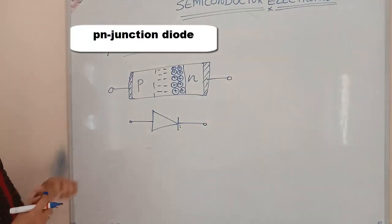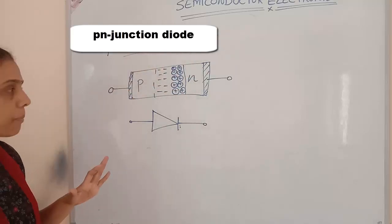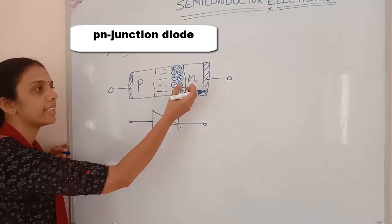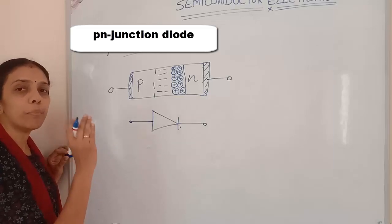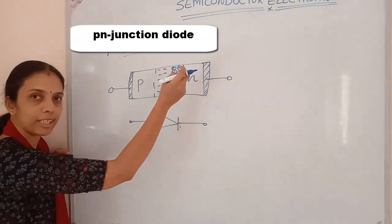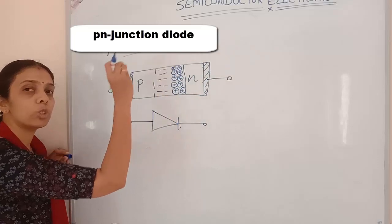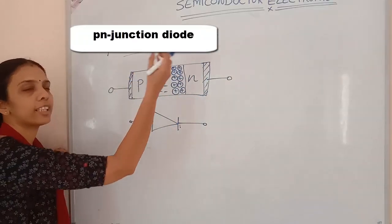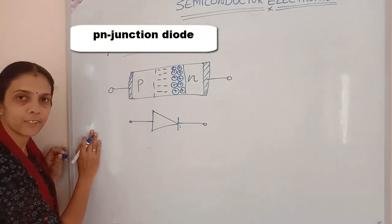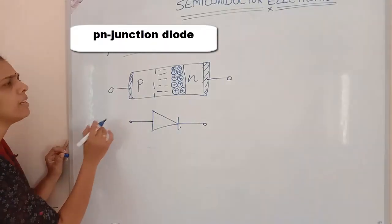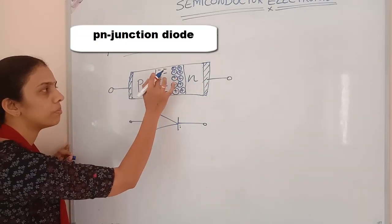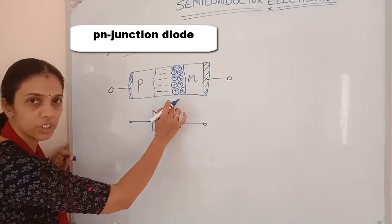In P-type semiconductors, holes are the majority carriers, and in N-type, electrons are the majority carriers. When P and N type come together, electrons from the N side move towards P, and holes from the P side diffuse towards N. So the majority carriers are moving to the opposite sides.